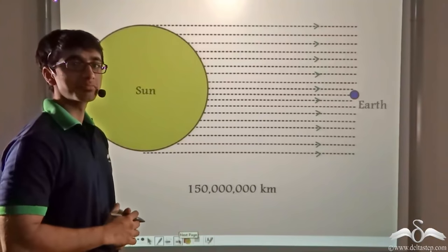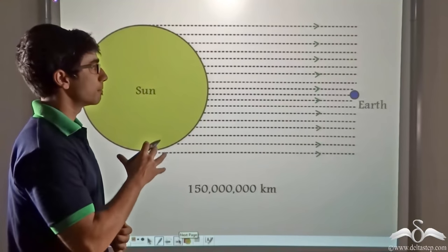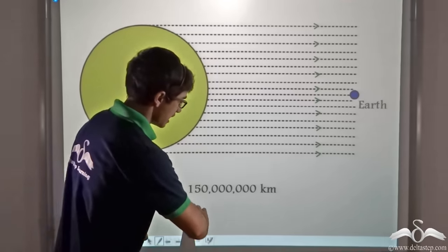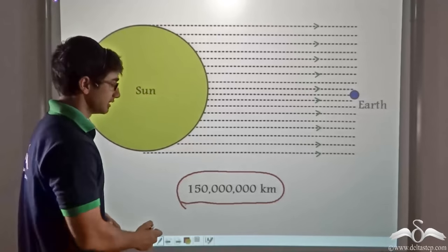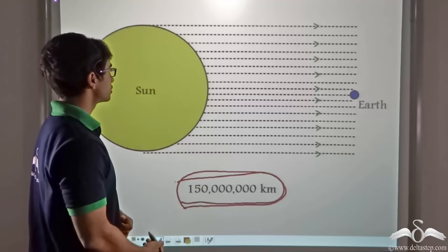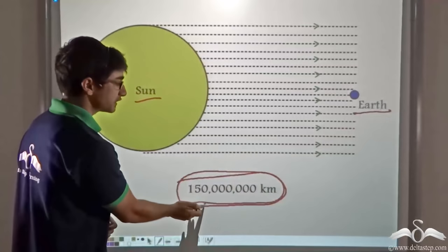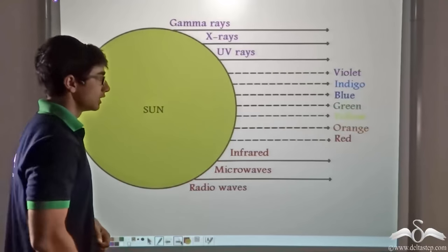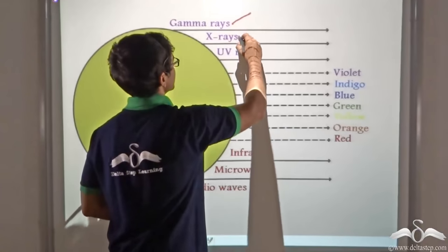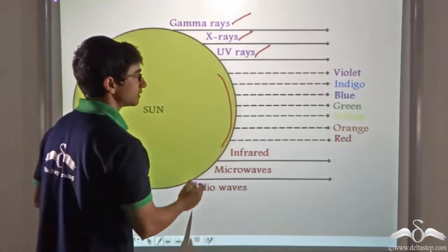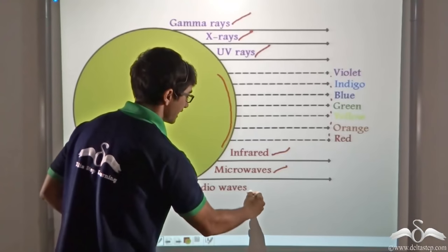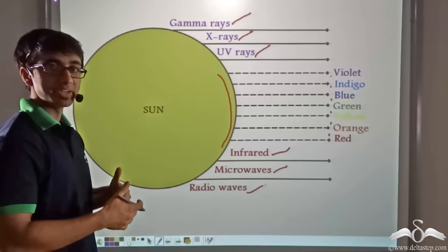Before we get to the depth of this interesting mystery, let us consider a very mind-boggling fact. Did you know that the distance of the Earth from the Sun is a hundred and fifty million kilometers? This is the distance which the light rays have to cover in order to travel from the Sun to the Earth. Now we have studied that the Sun emits all kinds of electromagnetic waves — gamma rays, x-rays, UV rays, visible light that consists of seven components, and also infrared rays, microwaves and radio waves.